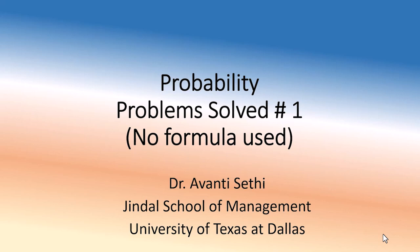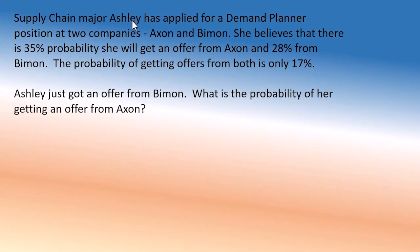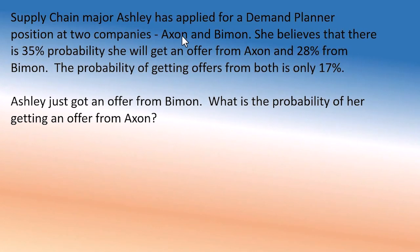In this sequence of videos, we'll be solving some probability problems. So let's go with our first one. Ashley has applied for a job at two different companies — let's call them A and B, Exxon and Biman. Getting a job from Exxon is 35% and from Biman is 28%. She may also get an offer from both companies, and that is 17%. She now has an offer from Biman and is wondering: will Exxon also send her an offer?